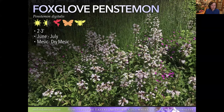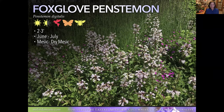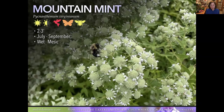Foxglove Penstemon — most penstemons really like well-drained to dry soils, but this one is much more tolerant of clay soils and will take moist to dry conditions. If it's happy, it will reseed and spread. There's a beautiful planting of this at Lurie Gardens, if you want to see gorgeous gardens in Millennium Park in Chicago — they've mixed native plants with cultivated plants there. It's a great early summer flowering plant providing a good vertical accent, and hummingbirds and butterflies love it.